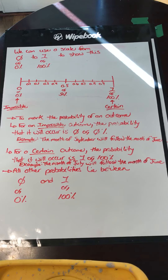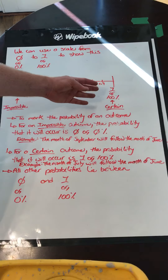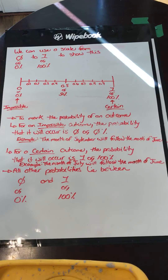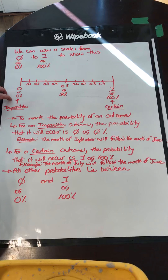We can use a scale to show this. On the left side we have 0 or 0% and the event is impossible. For an impossible outcome, the probability that it will occur is 0 or 0%. So for example, the month of September will follow the month of June — that is not going to happen. There's a 0% chance of that outcome, so that event is impossible.